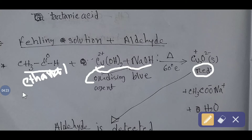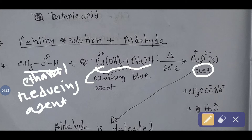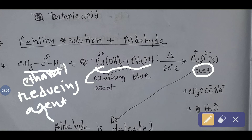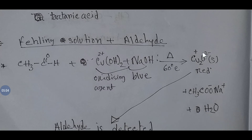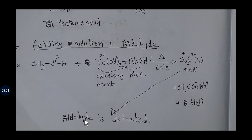The copper hydroxide from Fehling's solution is the oxidizing agent, and the aldehyde is the reducing agent. The reducing agent — ethanal — will be oxidized to sodium ethanoate, and the oxidizing agent will be reduced to cuprous oxide. The red color of cuprous oxide is the proof of the presence of aldehyde in the solution.